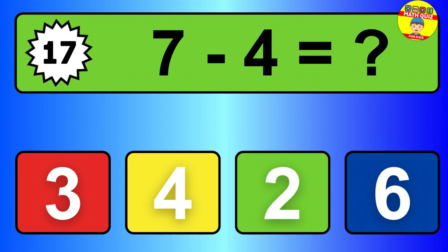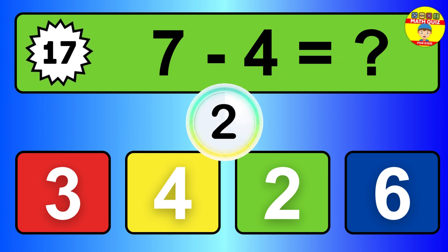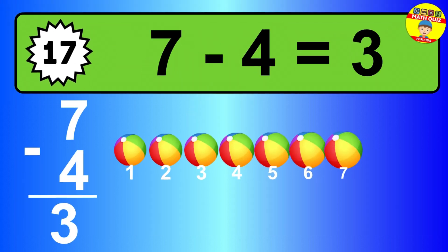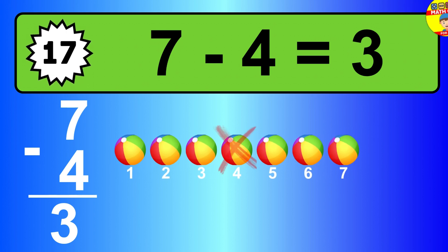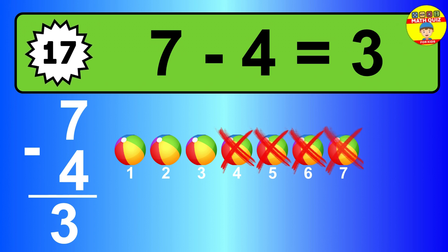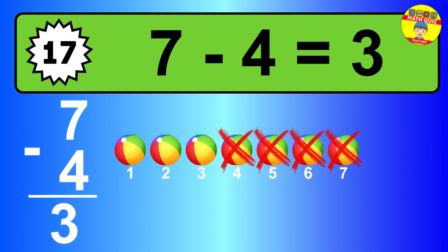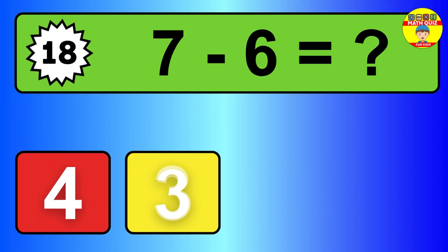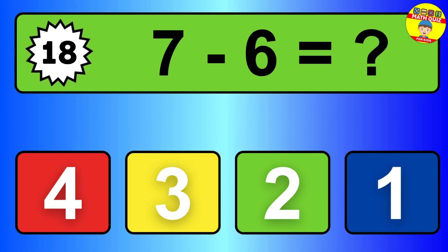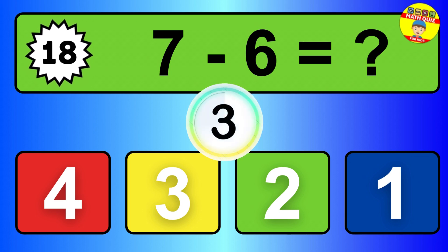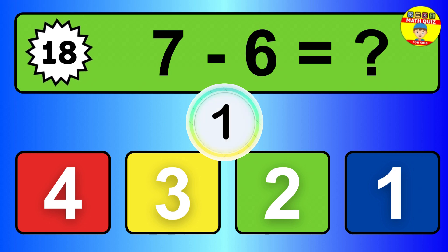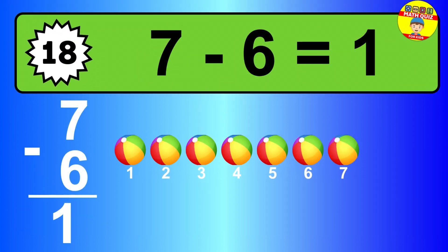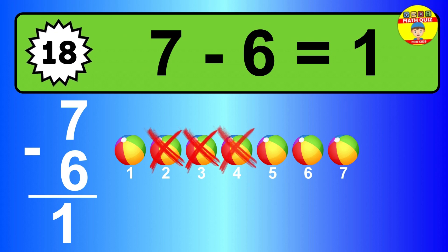Question seventeen. Seven minus four equals what? So the answer is seven minus four is three. Let's count it. One, two, three. So the answer is seven minus six is one. Let's count it. One.